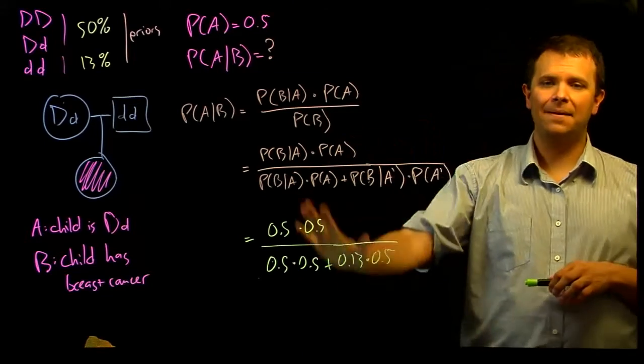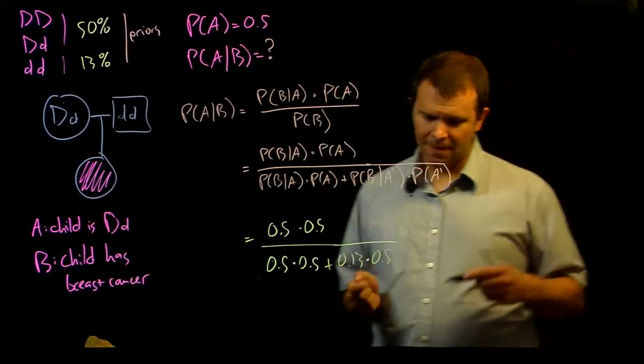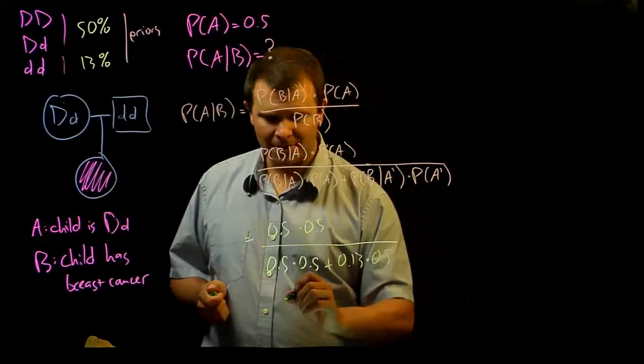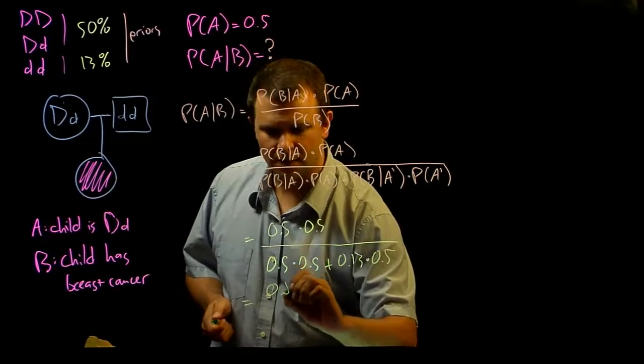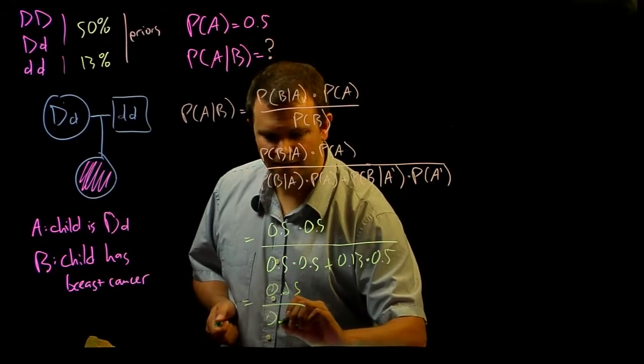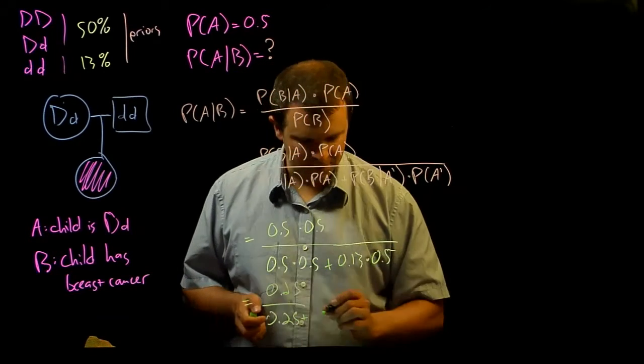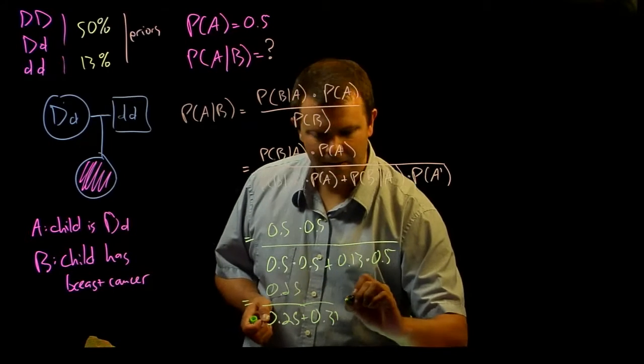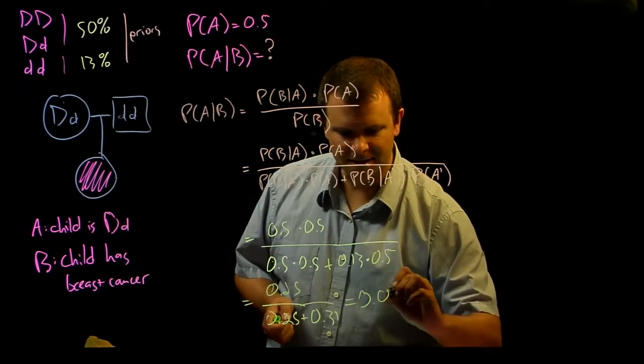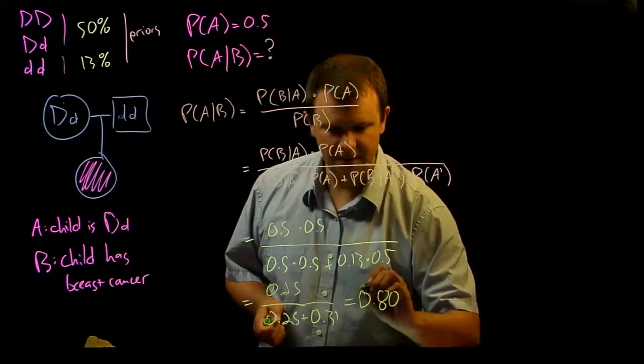And so now that we've got the problem set up, it's just some math. 0.25 divided by 0.25 plus 0.31, approximately 0.80.